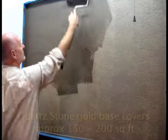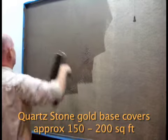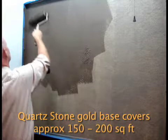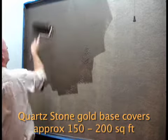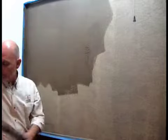You can get about 300 square feet per gallon on the base coat and 150 to 200 square feet per gallon on the top coat. So right now I'm doing this random curving motion, applying the Quartzstone in the gold base.